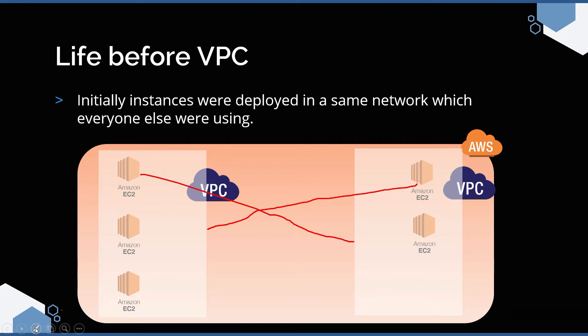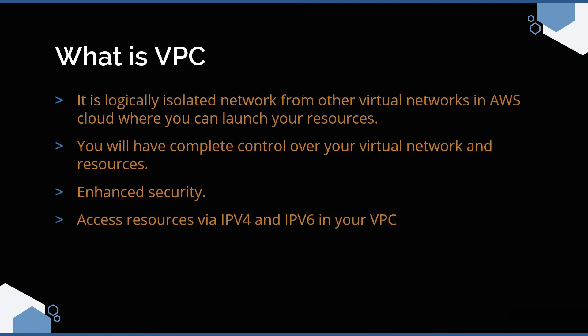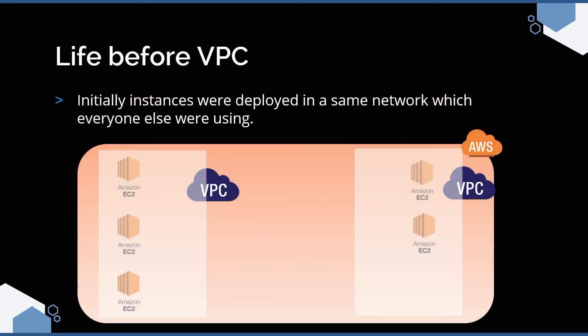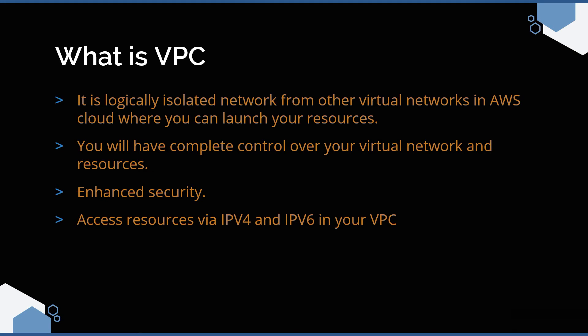If you want to access a resource deployed in a different VPC, that is possible using VPC peering — we will discuss VPC peering in a different video. For now, understand that inter-VPC communication is possible. VPC is a logically isolated network from other virtual networks in the AWS cloud where you launch your resources. We do this to get complete control over your virtual network and the resources within it, which also helps enhance your security. When I say complete control, you get control over your IP addresses, components, hardware devices like routers, NAT gateways, EC2 instances, subnets — everything.